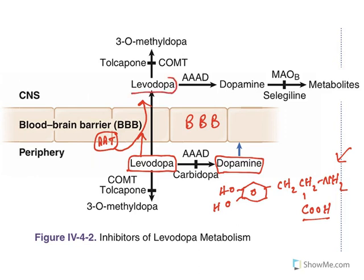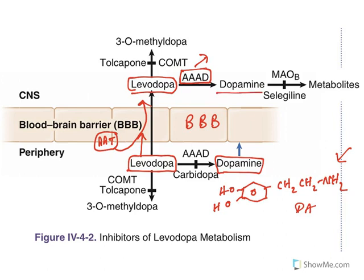Levodopa can be used because it can cross the blood-brain barrier. When you look at the structure of levodopa, it is an amino acid — it has an amino group and an acid group. There are amino acid transporting proteins in the blood-brain barrier, so they will take levodopa into the brain. Once it gets into the brain, there is an enzyme called aromatic amino acid decarboxylase. Decarboxylase removes the carboxylic acid group, and once removed, you get dopamine. So levodopa is a prodrug that is carried into the brain by amino acid transporters, converted to dopamine, and shows its effects.